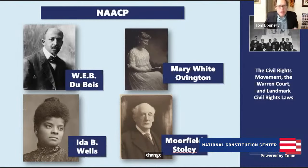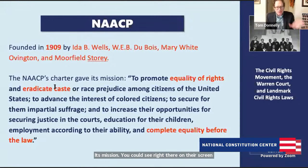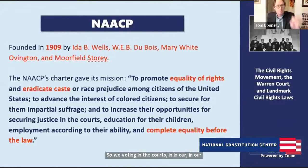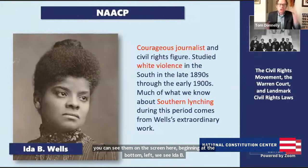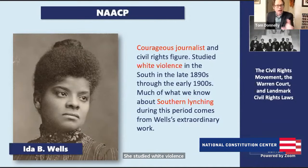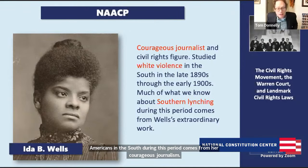The NAACP was founded in 1909 — so even there, you can see we often think of the civil rights movement as mostly the 1950s and 60s, but the NAACP is older than that. Its mission is to promote equality of rights and eradicate caste or race prejudice among citizens of the United States. They wanted to do it at the ballot box, in the courts, in our schools, at work — complete equality before the law. The NAACP brings together some really important figures. Beginning at the bottom left, we see Ida B. Wells, a courageous journalist and civil rights figure who studied white violence in the South in the 1890s and early 1900s. She helped found the NAACP.